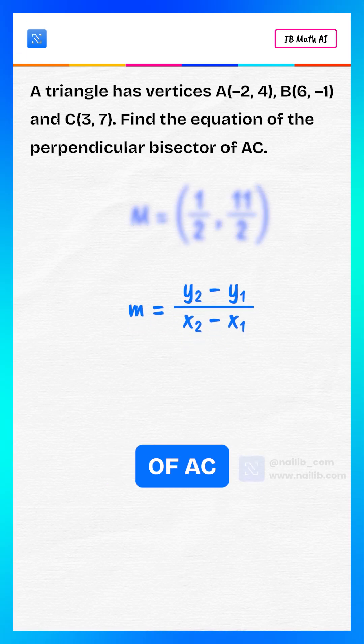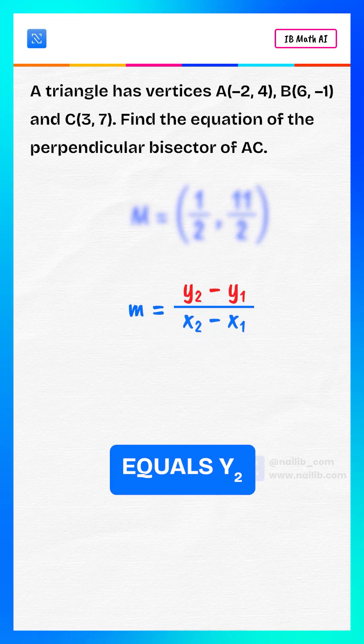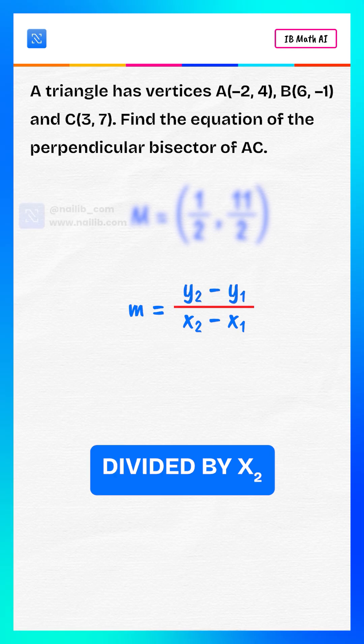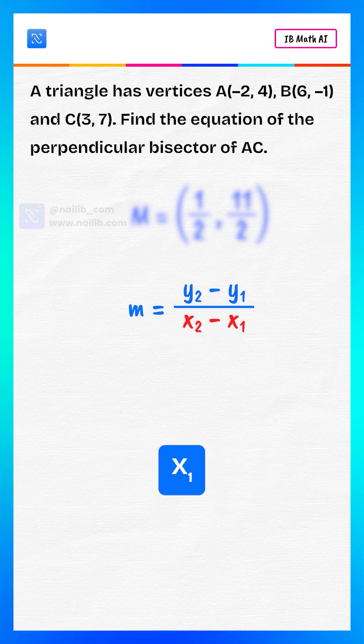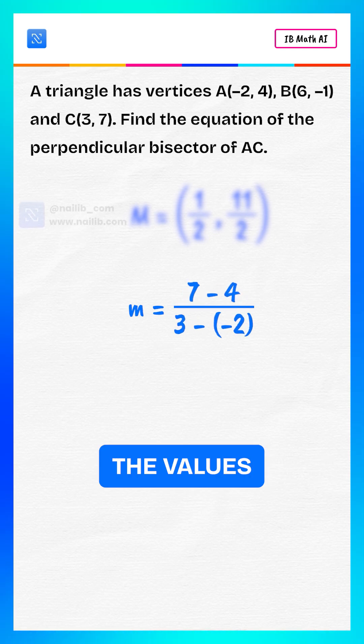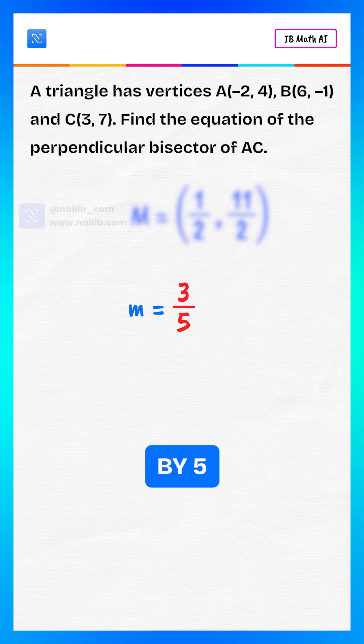Now, the slope of AC. Slope M equals (y2 - y1)/(x2 - x1). Substitute the values. So slope M equals 3/5.